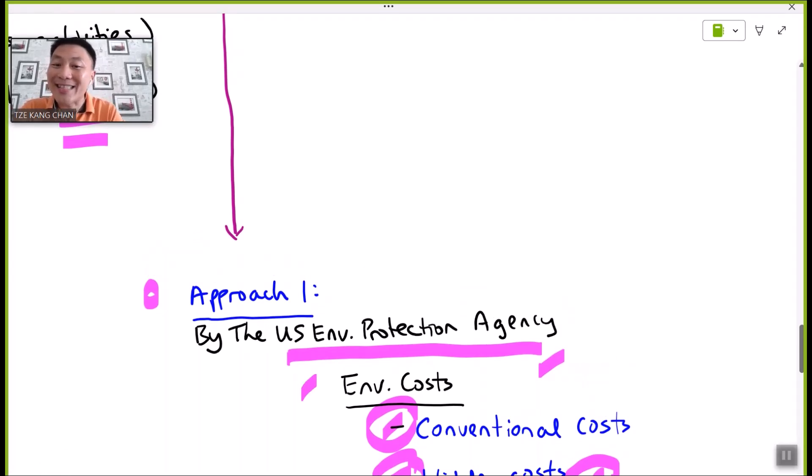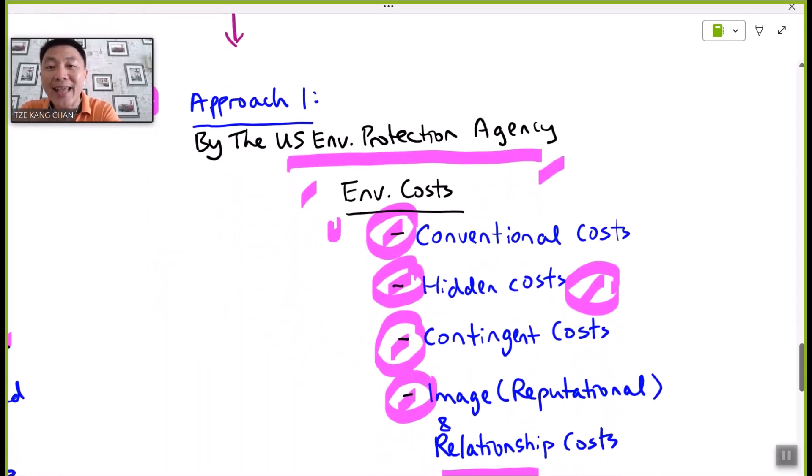In the agency's discovery, environmental costs are suggested to be broken down into four main categories: conventional costs, hidden costs, contingent costs, and image and relationship costs. You are strongly advised to take a look at the study hub's content as well as the article to understand the meaning of it, so that you will be able to handle the questions that ask you to classify costs given in the exam questions to each of the four categories accordingly.